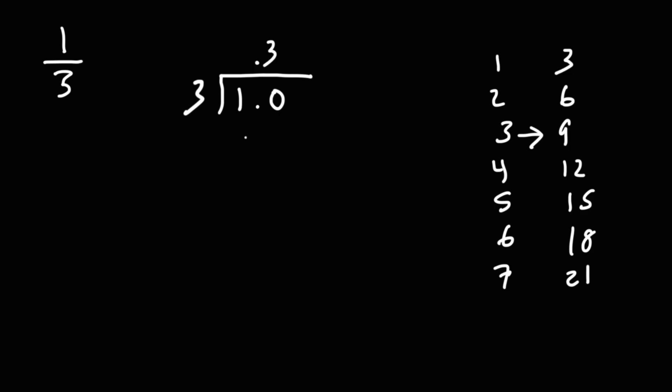3 times 3 is 9, so 3 times 0.3 is 0.9. 10 minus 9 is 1, so 1.0 minus 0.9 is 0.1. Now we need to add a 0. 3 goes into 10 three times, so this is going to be 0.09.